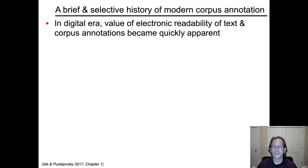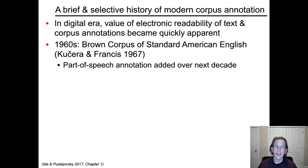There have obviously been collections of texts for a long time — that's what libraries are. But early on in the digital era, in the mid-20th century, it became quickly recognized that from an informatics point of view — from the point of collecting, maintaining, searching, and retrieving information in text form — good electronically readable text and corpus annotation on that text became very valuable. The first real landmark corpus annotation effort was the Brown Corpus of Standard American English in the 1960s.